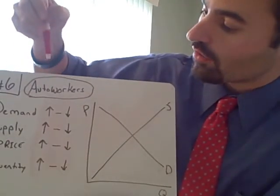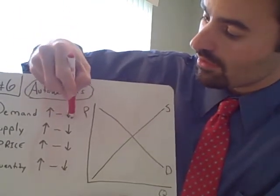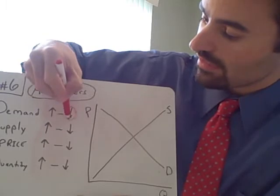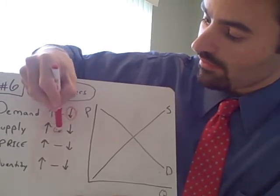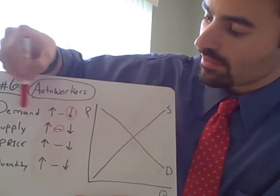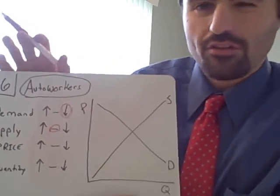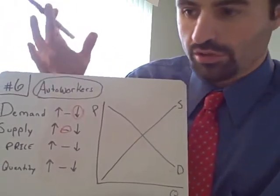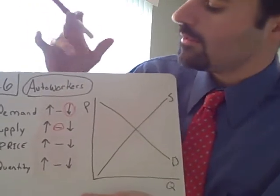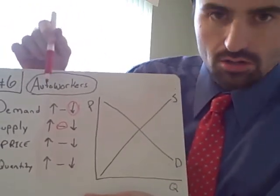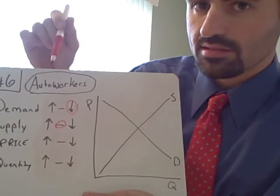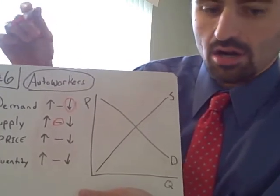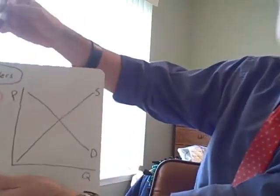So the demand for autoworkers is either going to go up or down. Well, we're making less cars. Common sense says, are we going to need as many autoworkers? No, because we're making less cars. So demand for autoworkers is going to go down.